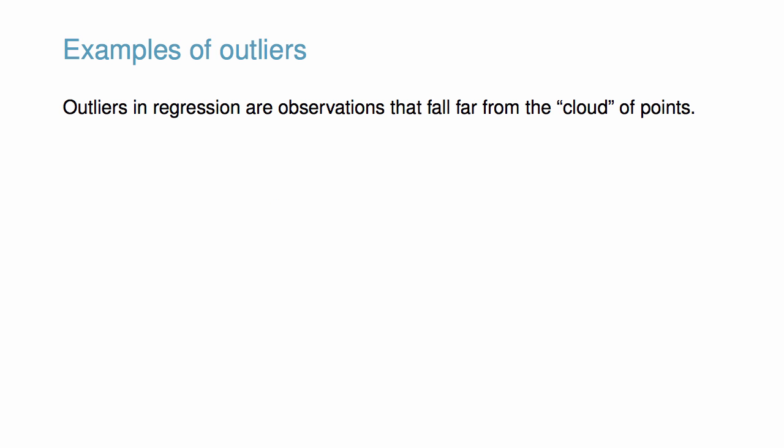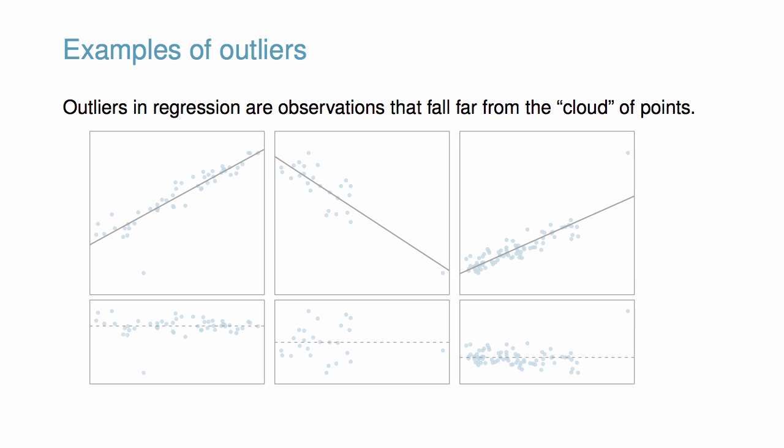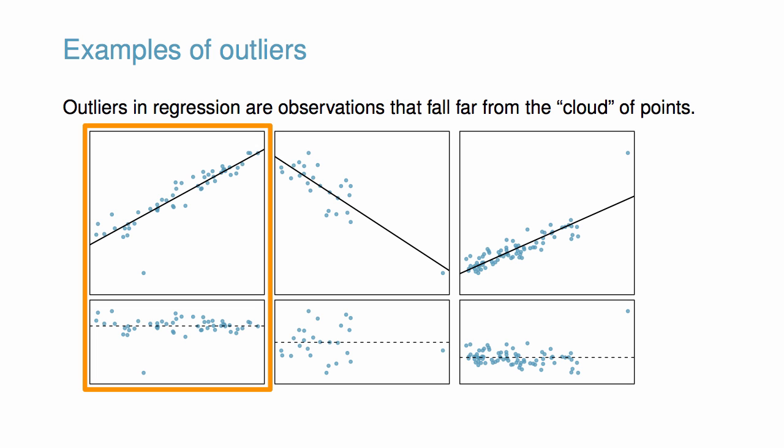Outliers in regression are observations that fall far from the cloud of points. Some of them will turn out to be influential points, because they invoke strong influence on the slope of the line. In the panel to the left, there is one outlier far from the other points, though it only appears to slightly influence the line.